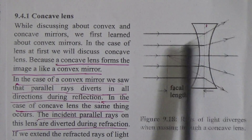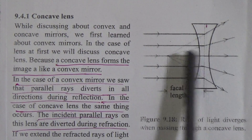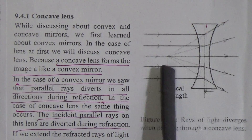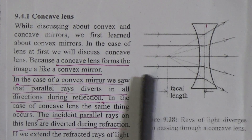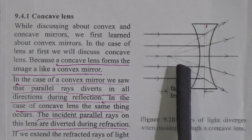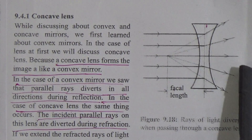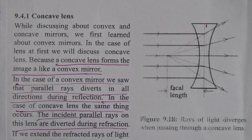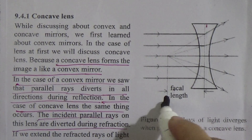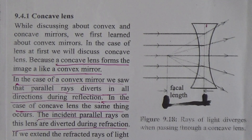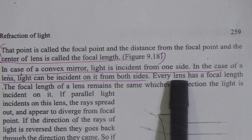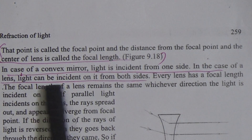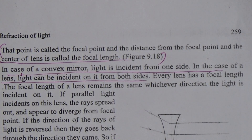See this figure. The incident parallel rays on this lens are diverted during refraction. If we extend the refracted ray of light backwards, it would seem that they are spreading out from a point — this point is called focal point. The distance from the focal point to the center of the lens is called focal length. In the case of a lens, light can be incident on it from both sides.